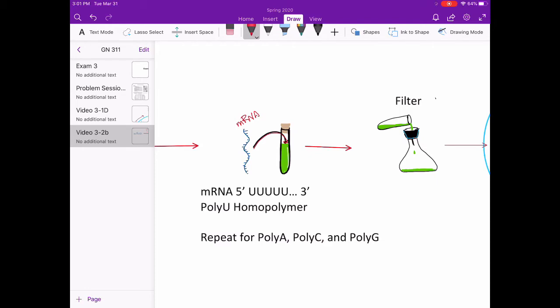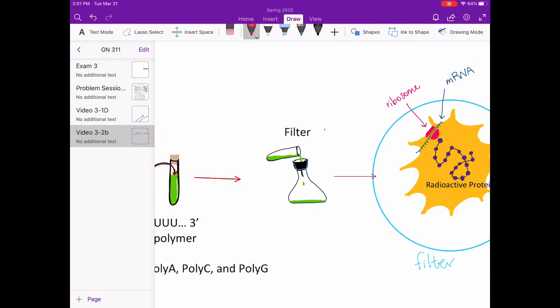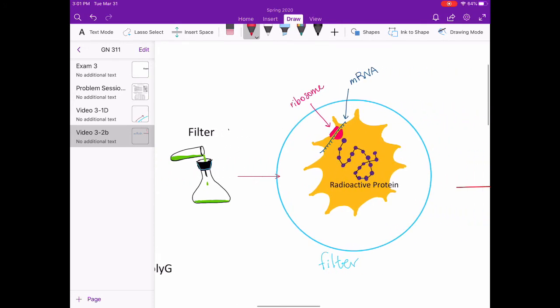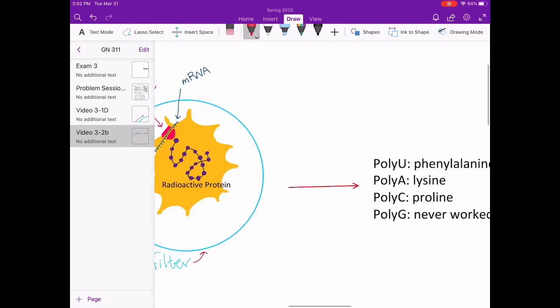The mixtures were then put through a filter that would catch the ribosomes but allowed the other cell material through. The filter was then checked for radioactivity, which showed that the radioactive amino acids bound to the ribosomes. The mixture that showed radioactivity was able to form a radioactive protein and could then be linked to the mRNA code that was inserted into the mixture.